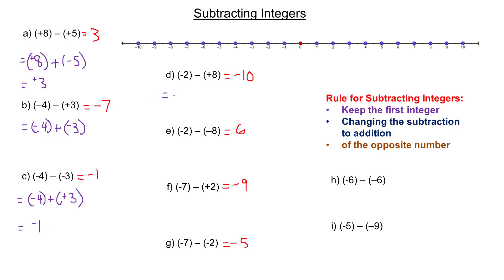For example D: keep negative 2 and change subtract positive 8 to adding negative 8. Adding two same-sign integers — both negative — add 2 and 8 to get 10, keeping the negative: negative 10. For example E: keep negative 2 and change subtract negative 8 to adding positive 8. With different signs, take the difference between 2 and 8 to get 6, and since the bigger number is positive 8, the answer is positive 6.